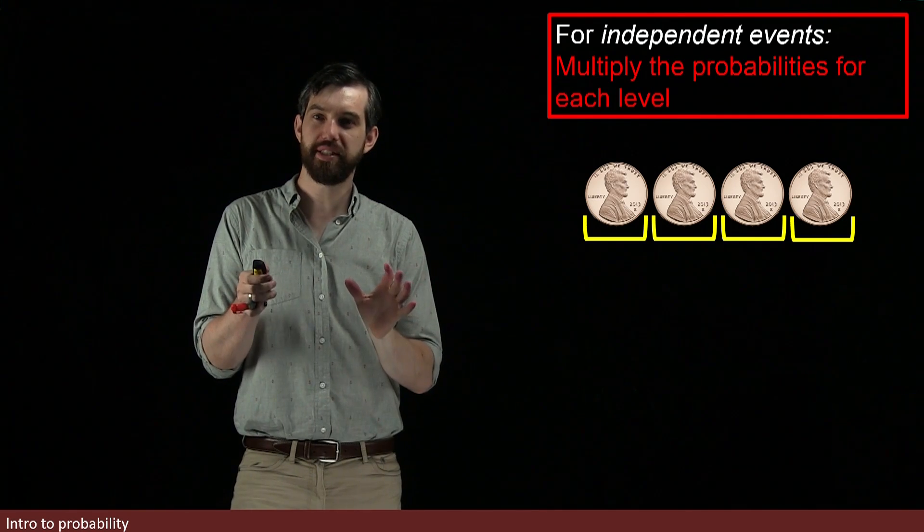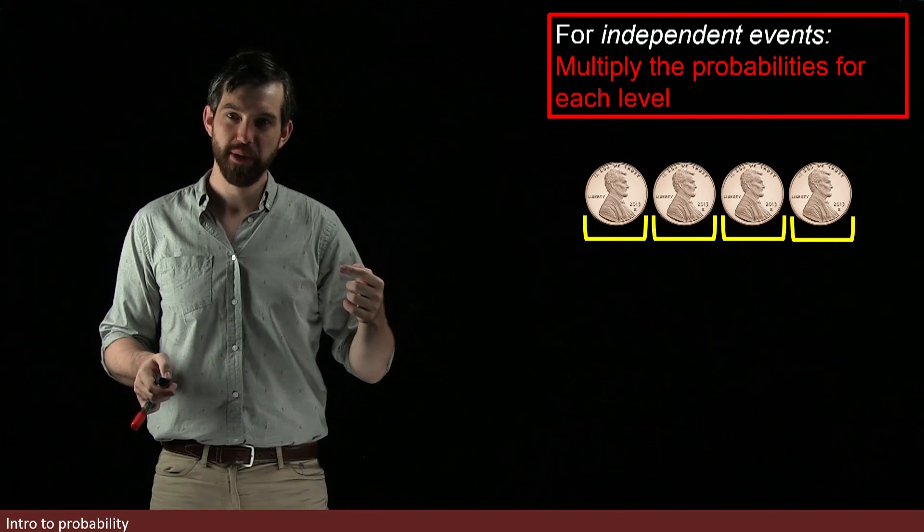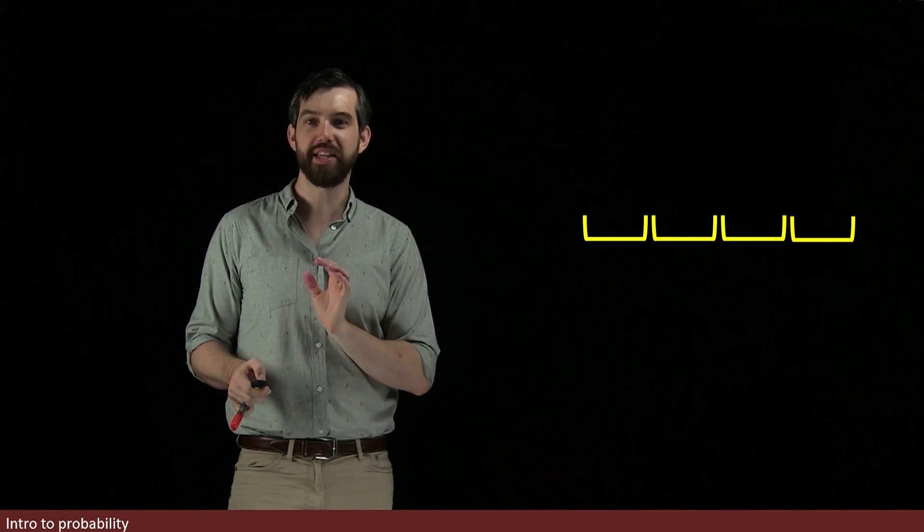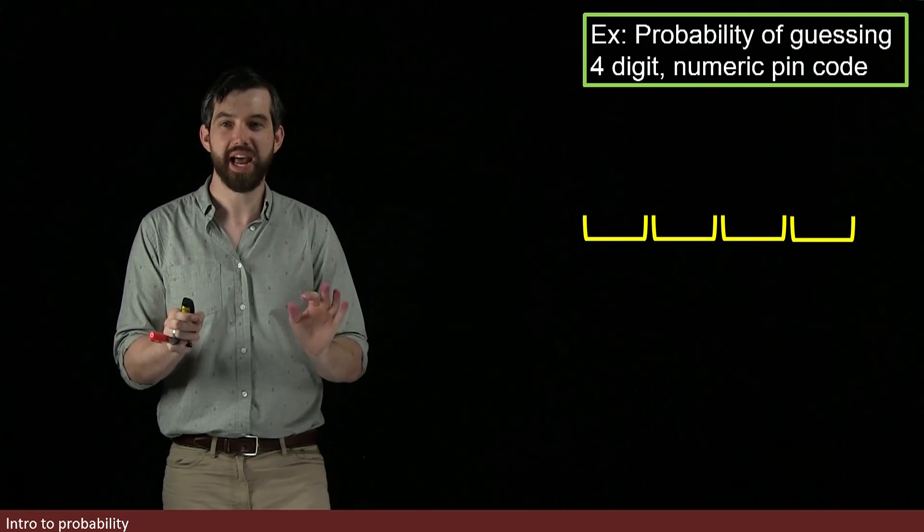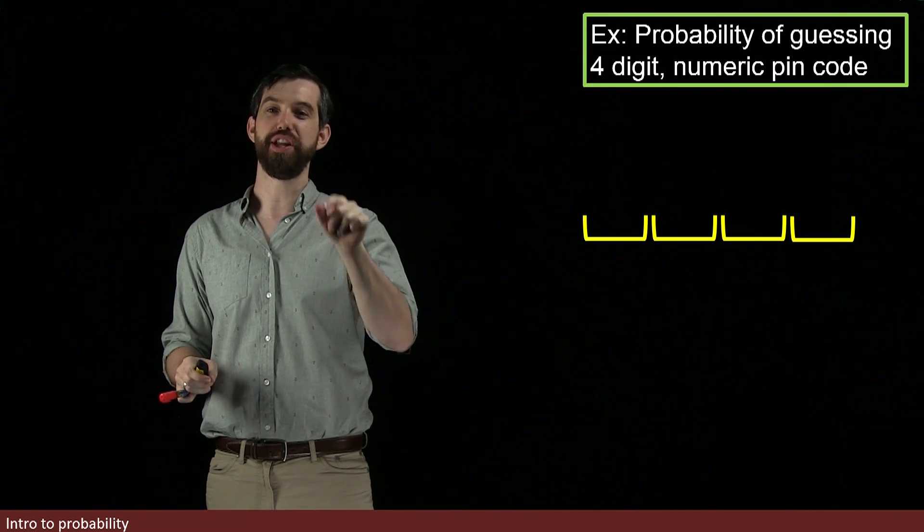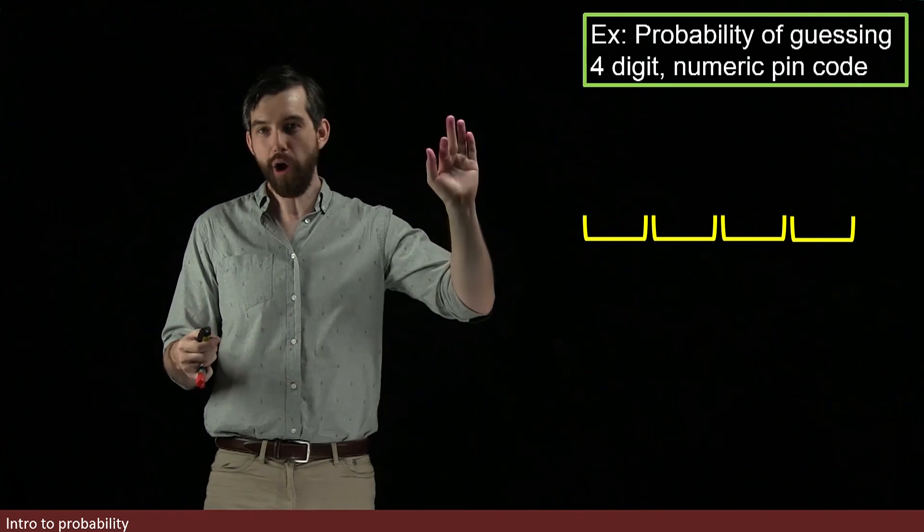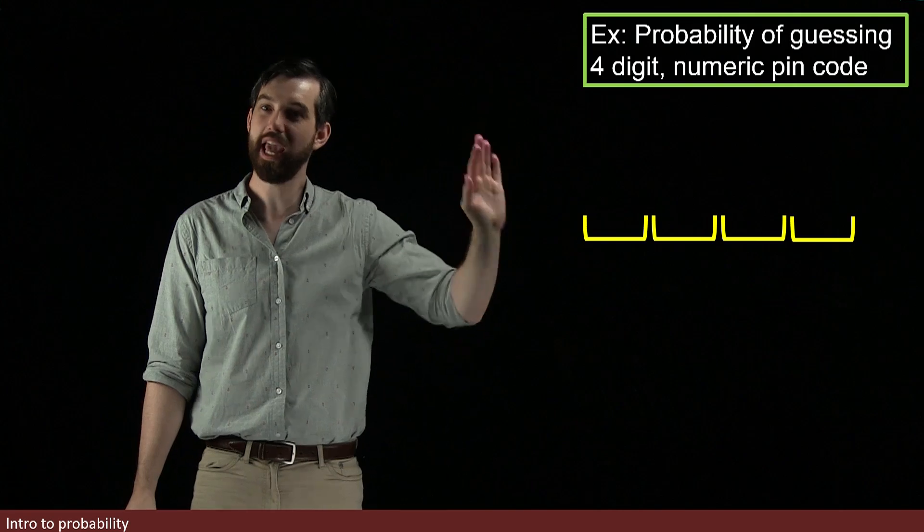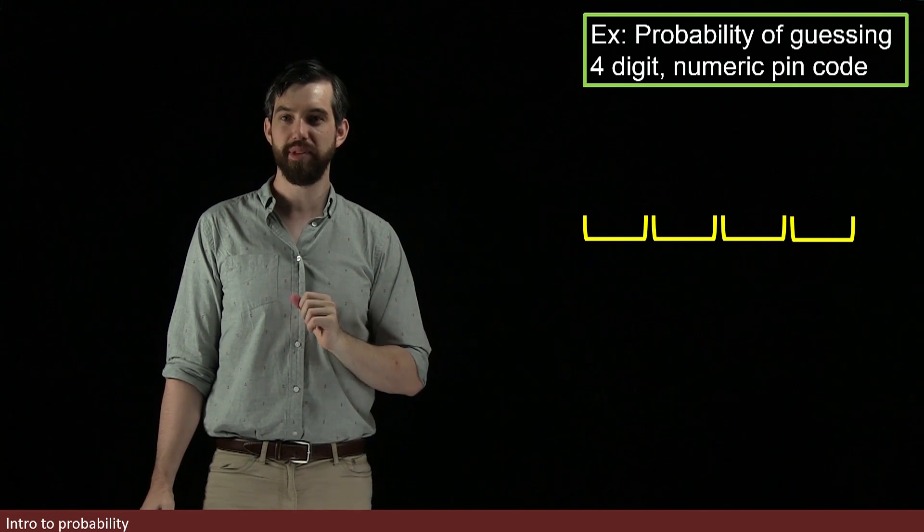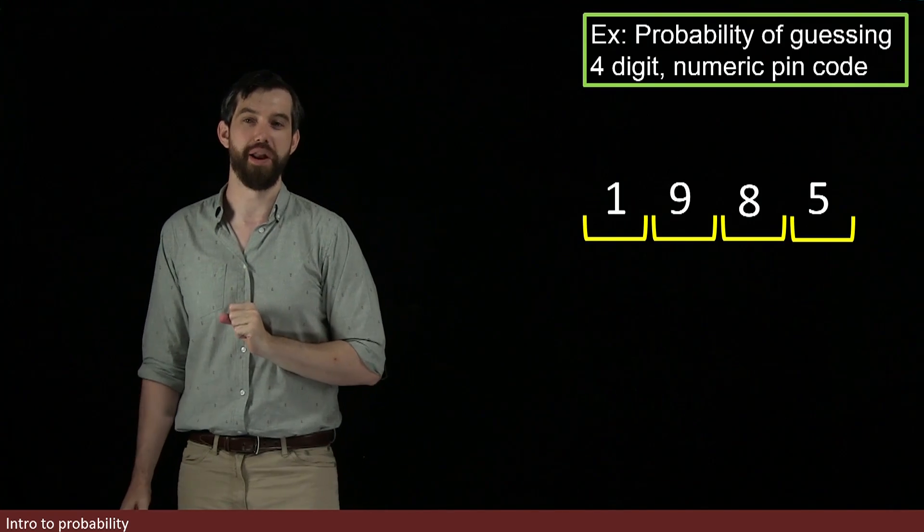Let's use this same structure of four different independent events, but for a different problem. I'm going to investigate what happens if I want to study the probability of guessing a four-digit numeric PIN code. We all have these on our different bank cards and so forth, but how hard is it to actually guess one of these numbers? So what happens is that you have some particular four-digit PIN code, maybe how about this one?